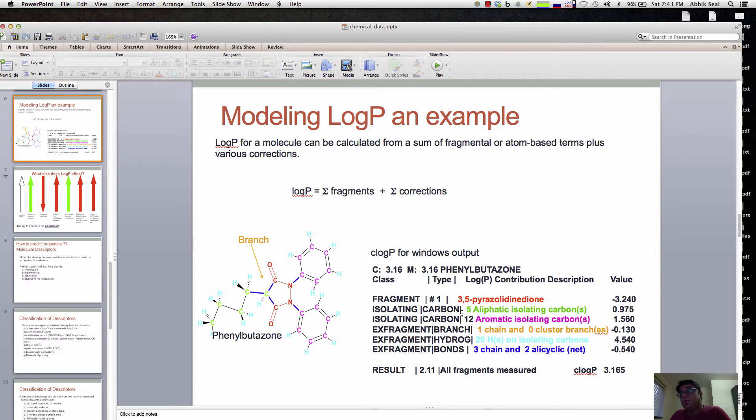There are various algorithms for doing this fragmentation and various ways you can measure log P. Not only fragmental - there are atom-based properties that count the number of atoms and add them up because every atom has a log P value. There are various approaches to calculating log P, and I can share a lot of papers on modeling log P.